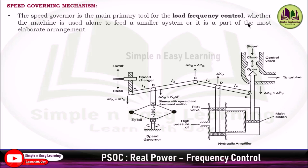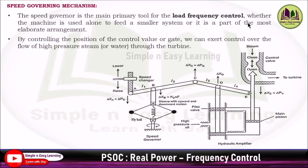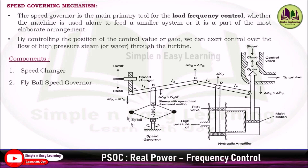The speed governor arrangement plays a very important role in load frequency control. By controlling the position of the control valve where steam enters the turbine, we can control the flow of high pressure steam through the turbine, thereby controlling the turbine speed so that frequency is also controlled. The main components in the speed governing mechanism are: the speed changer, the fly ball speed governor, the hydraulic amplifier, and the linkage mechanism — points A, B, C, D, and E.